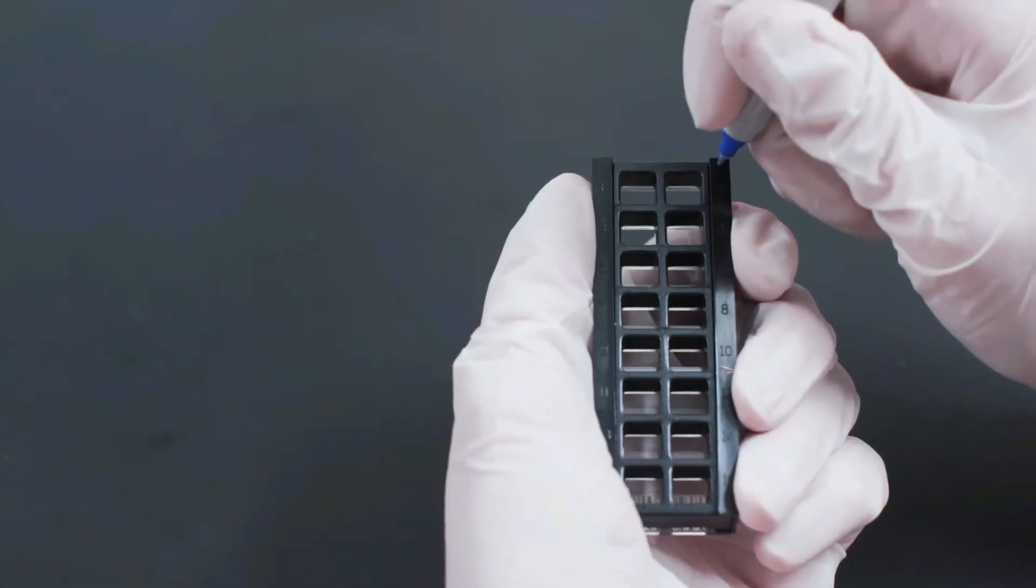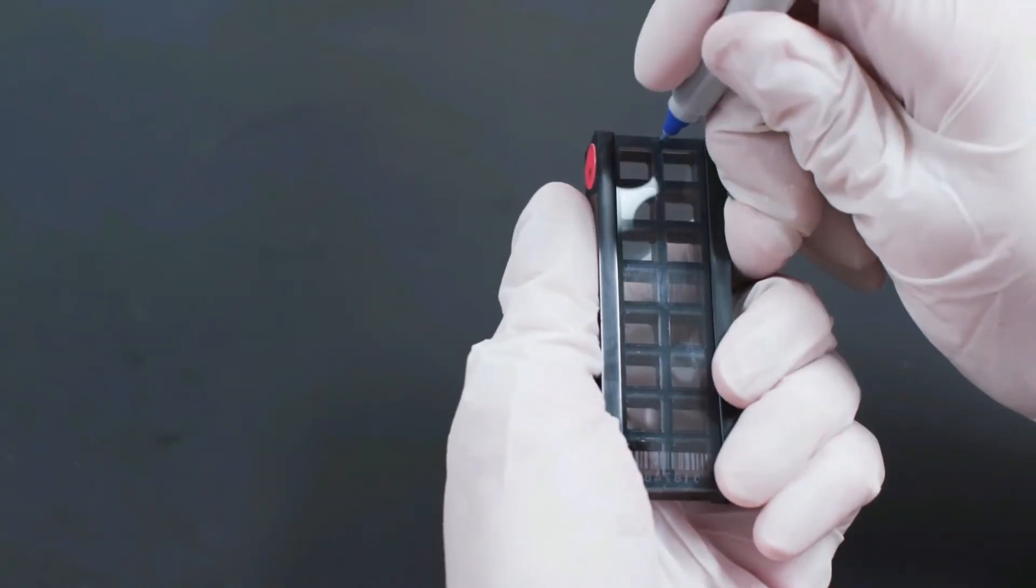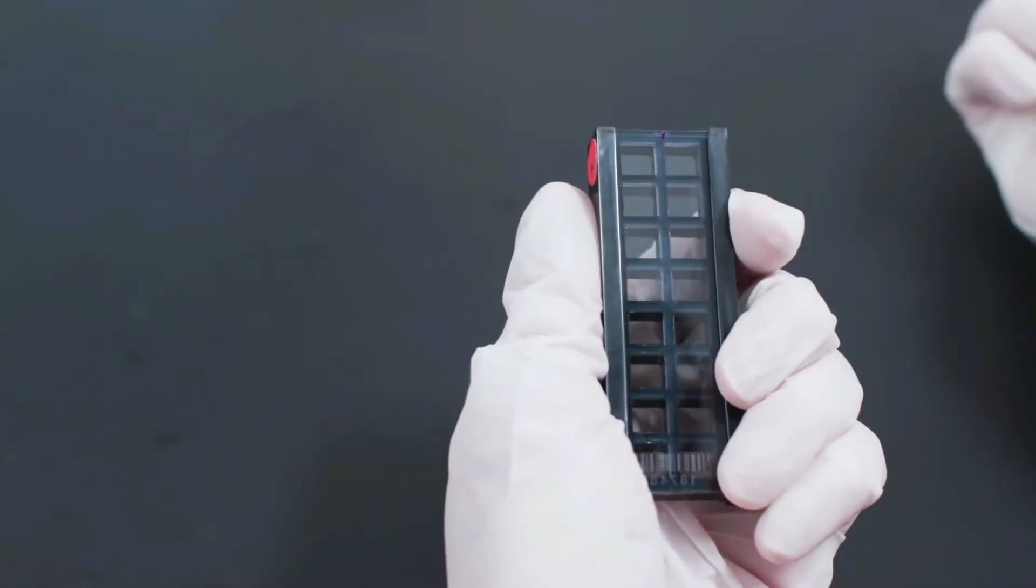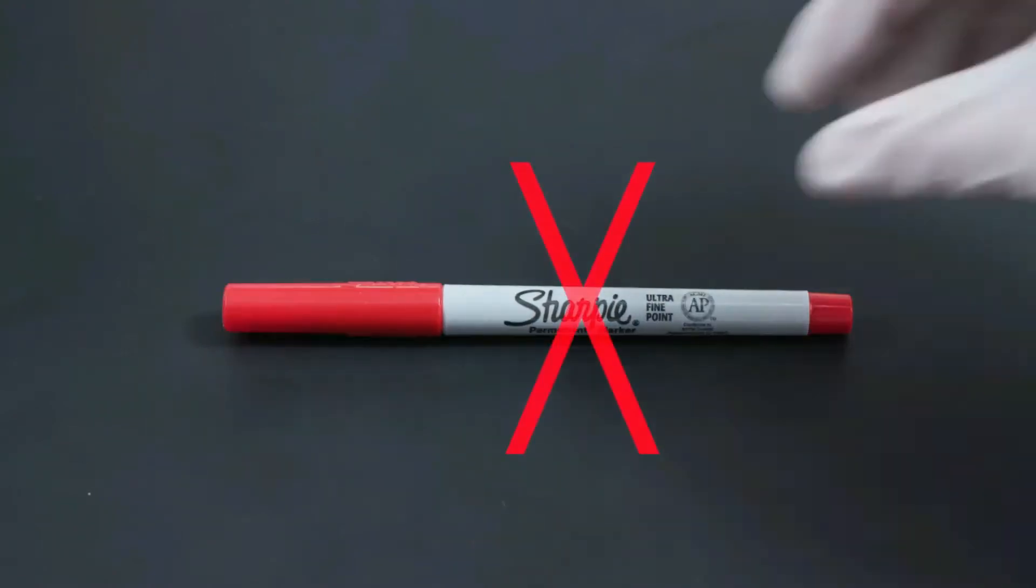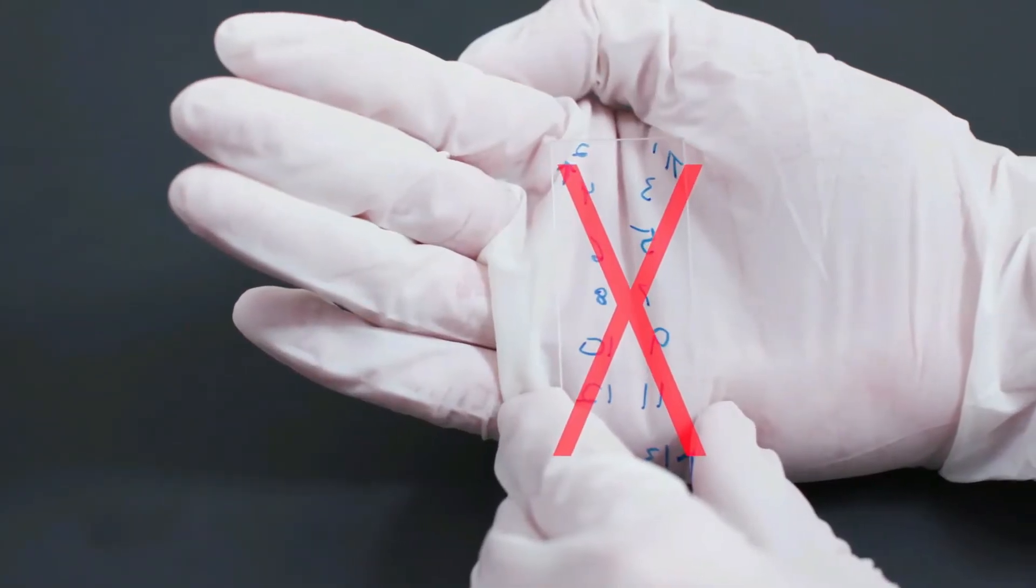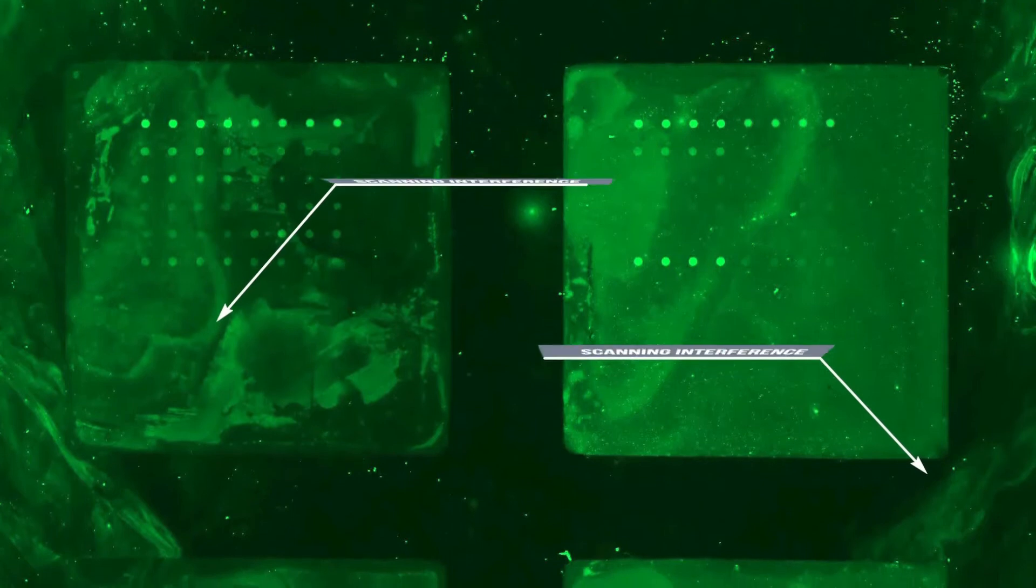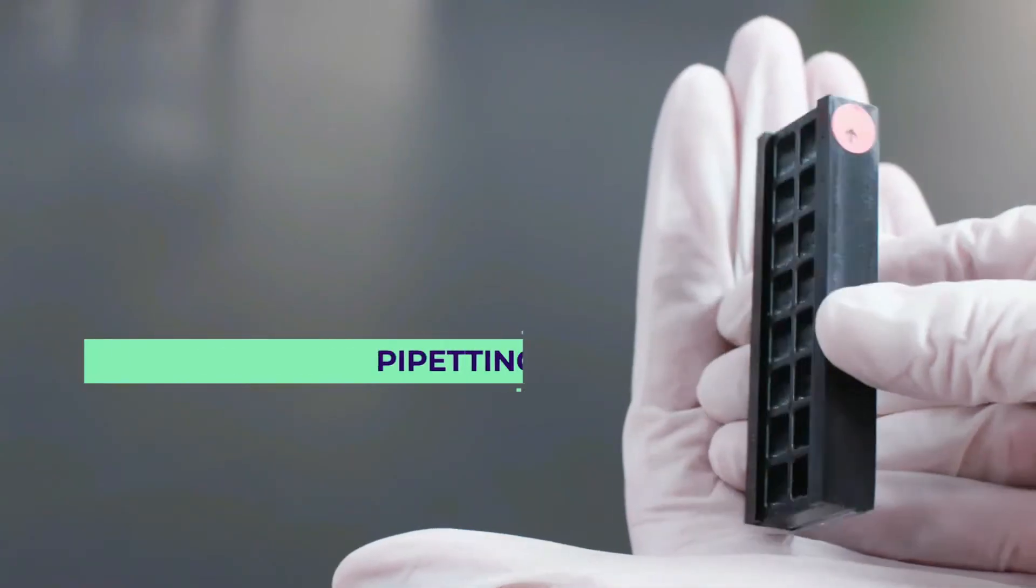If you're using more than one slide, you should mark the slides to differentiate them. It's best to make a very small marking along the top or bottom edge using a fine point permanent marker. In our experience, red or black ink can interfere with the array signals, so only use blue or green ink on the slide. Never write on the actual well area, as this will interfere with scanning.